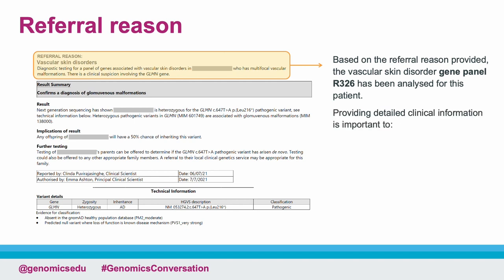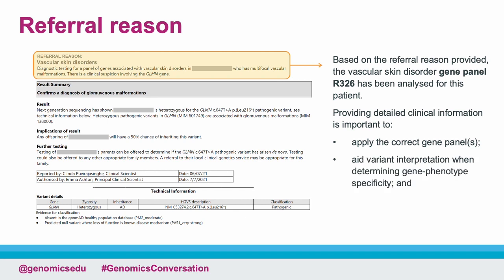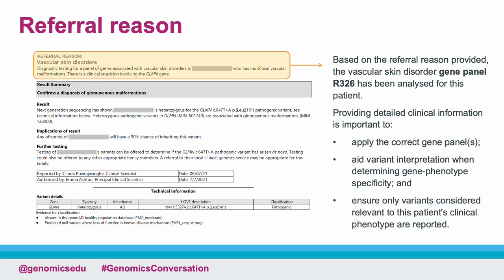Providing detailed clinical information is important to ensure correct gene panels are applied, aid variant interpretation when determining gene-phenotype specificity, and ensure that only variants considered relevant to the patient's clinical phenotype are reported. Any discrepancies could mean that the test or analysis performed for the patient is not correct.